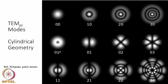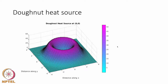TEM 01 mode produces a donut-shaped heat source, and there are other modes possible with different values of p and l. In a donut-shaped heat source, the maximum heat source is not at the center but at a ring-shaped region that is away from center. This means the peak temperatures achieved when the heat source falls on the material will not be as high as in a Gaussian mode.